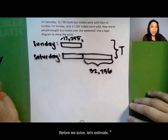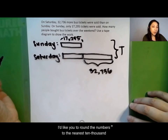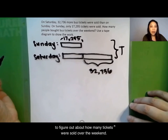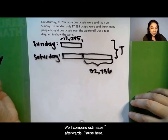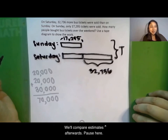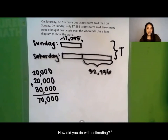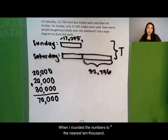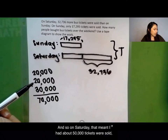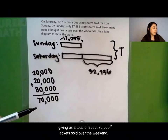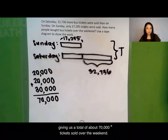Before we solve, let's estimate. I'd like you to round the numbers to the nearest 10,000 to figure out about how many tickets were sold over the weekend. We'll compare estimates afterwards. Pause here. When I rounded the numbers to the nearest 10,000, I saw about 20,000 were sold on Sunday. And so on Saturday, that meant I had about 50,000 tickets were sold, giving us a total of about 70,000 tickets sold over the weekend.